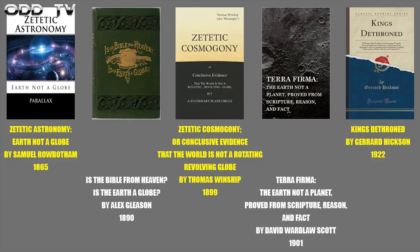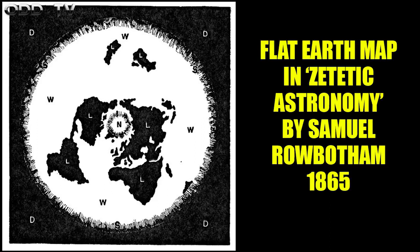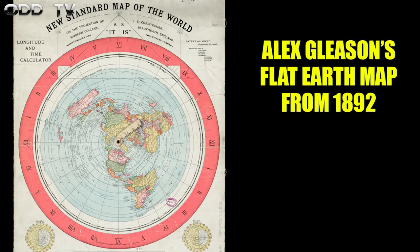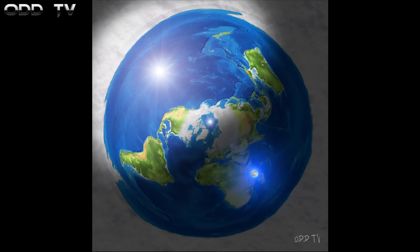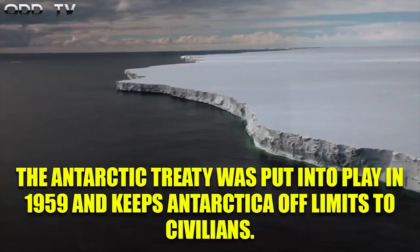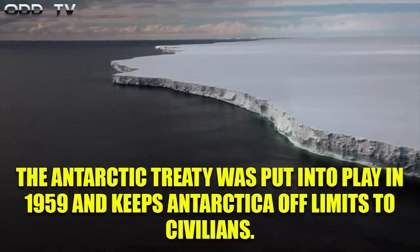We have Zetetic Astronomy from 1865; Is the Bible from Heaven? Is the Earth a Globe? from 1890 — written by the guy who made the now-famous Gleason's Map, which is a flat Earth map; Zetetic Cosmogony from 1899; Terra Firma: Earth Not a Planet from 1901, and so on. If you go to the website archive.org, you can find all of these and many more to download for free. Here's a flat Earth map in Samuel Rowbotham's book Zetetic Astronomy; here's Alexander Gleason's flat Earth map, one of the most popular to this day; and one from flat Earth advocate William Carpenter. They all look very similar as far as layout of the land — the known countries and continents in the middle, surrounded by Antarctica, which is not a continent but a perimeter of ice.